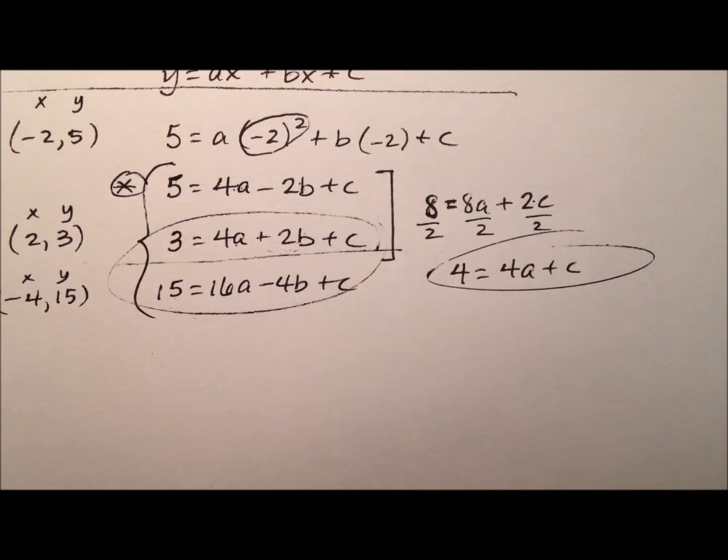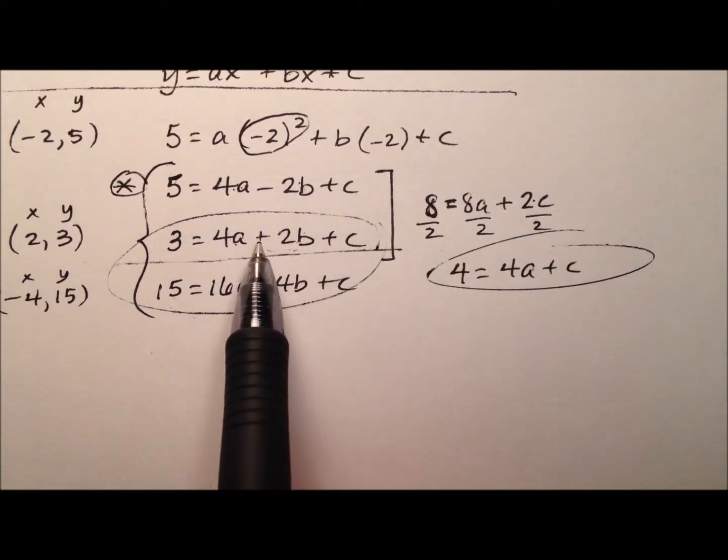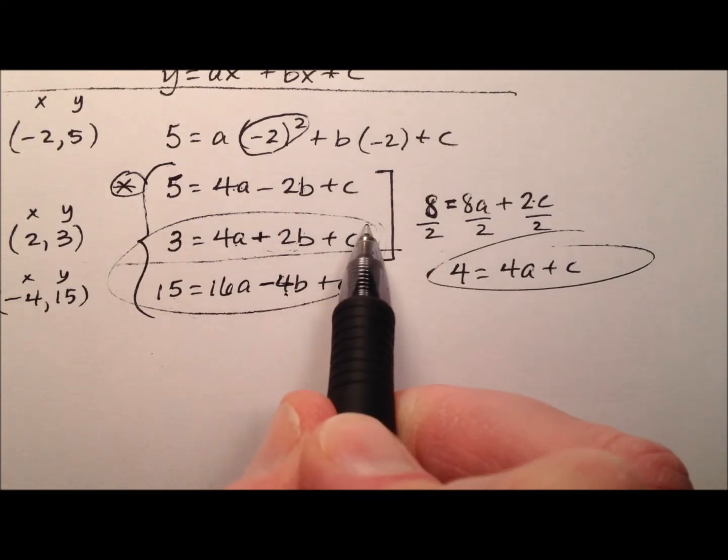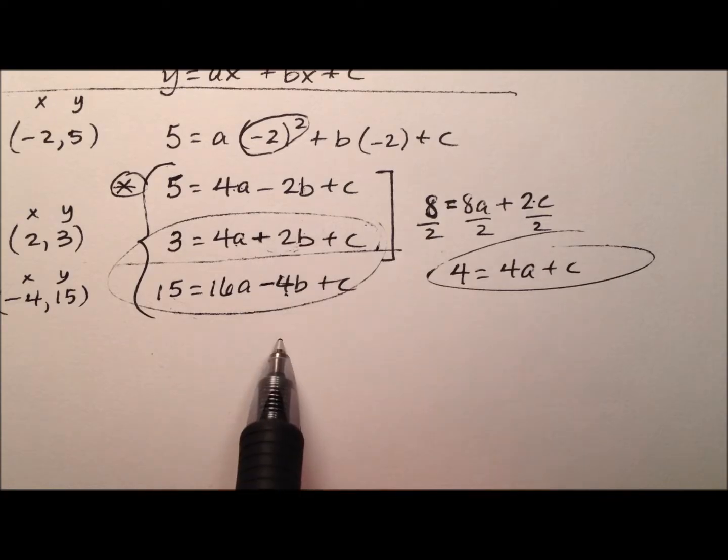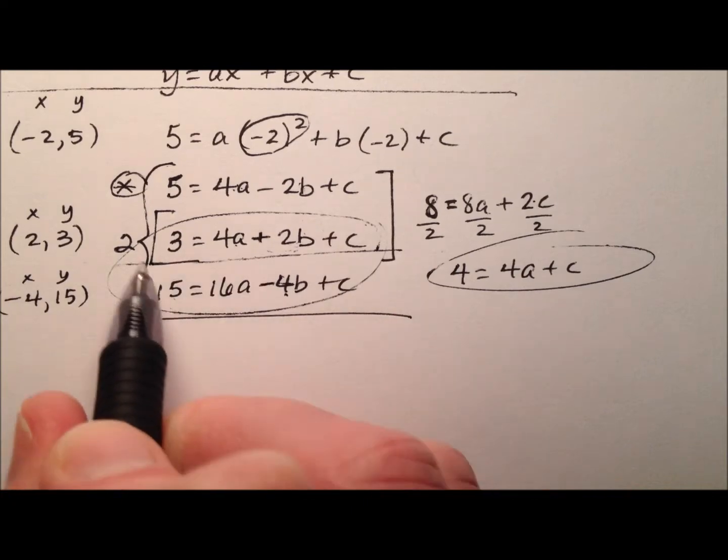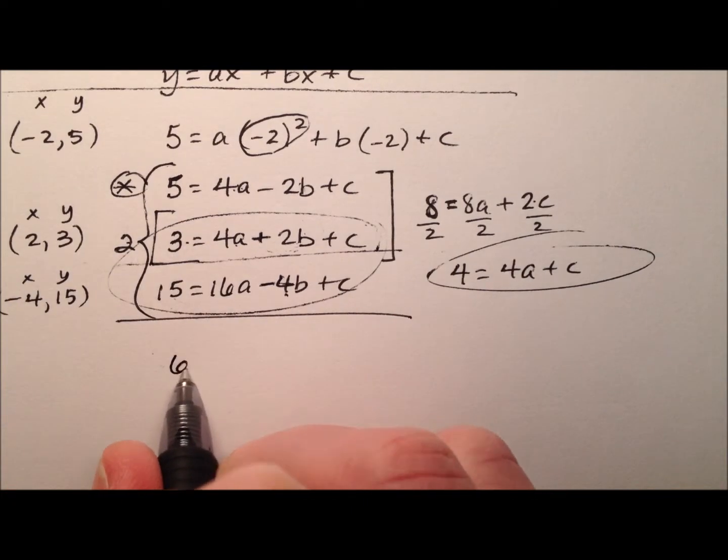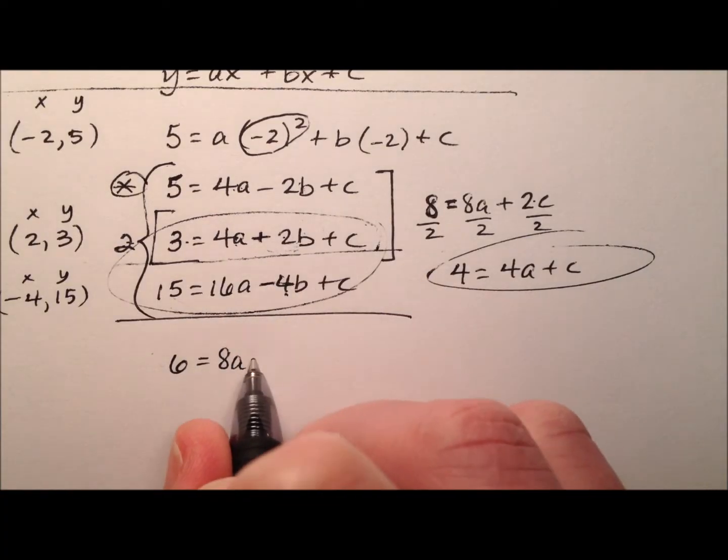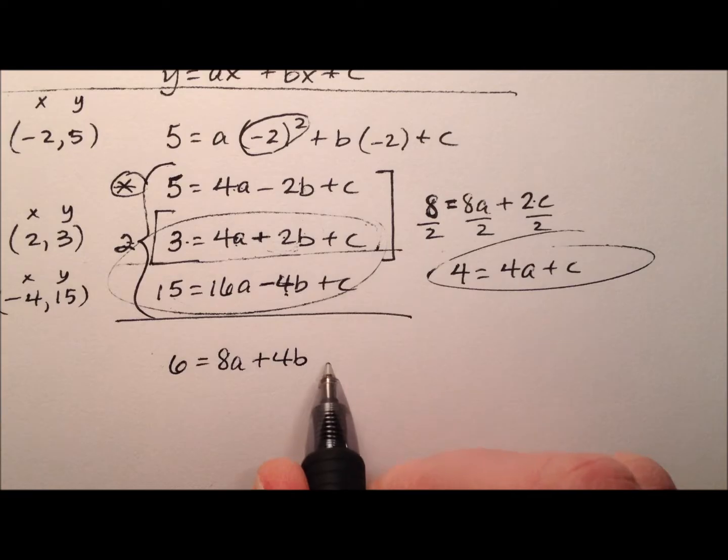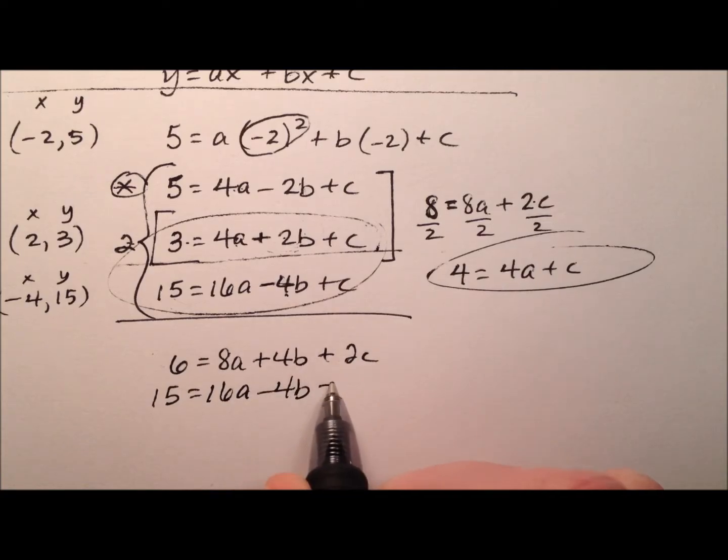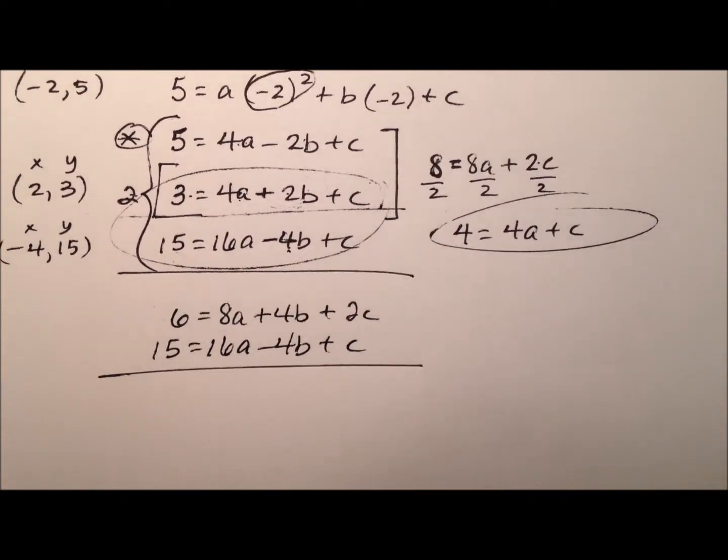Let's look at using these bottom two, because it looks like the b right here is a plus 2, and the b right here is a minus 4, so if I just doubled this one, I could add them and eliminate. Let's multiply this equation by 2. So 2 times 3 is 6, 2 times 4a is 8a, 2 times that 2b is positive 4b, and then 2 times c is 2c. We will rewrite the third equation below, unchanged, and add these up.